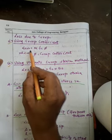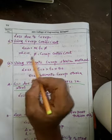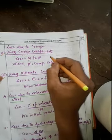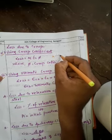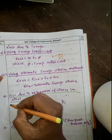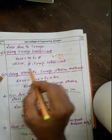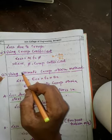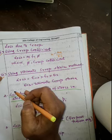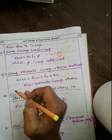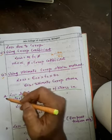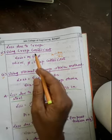Using the creep coefficient method: Loss = m × f_c × φ, where m is the modular ratio given by E_s / E_c (modulus of elasticity of steel divided by modulus of elasticity of concrete), f_c is the stress in concrete at the level of steel (same value calculated in the elastic deformation loss), and φ is the creep coefficient.